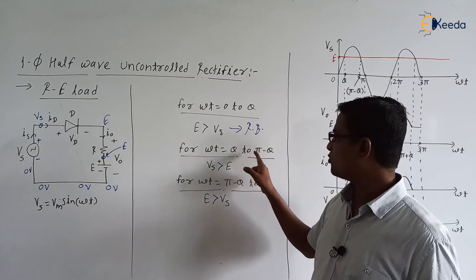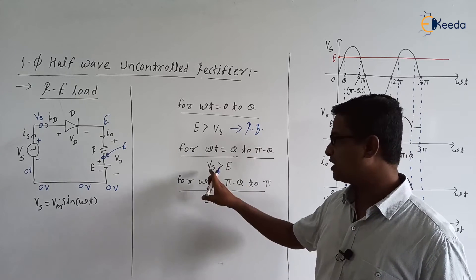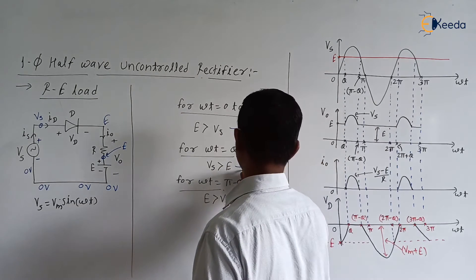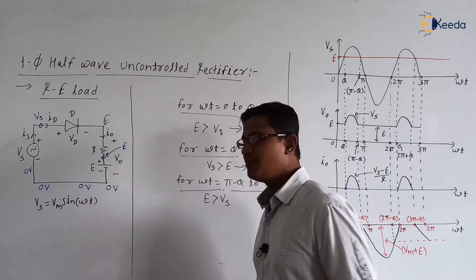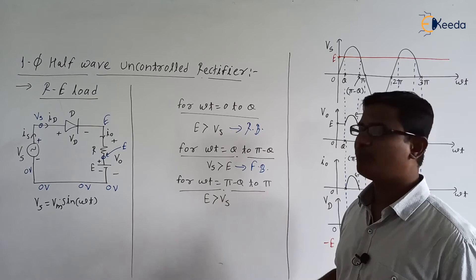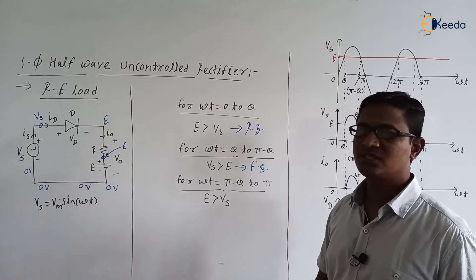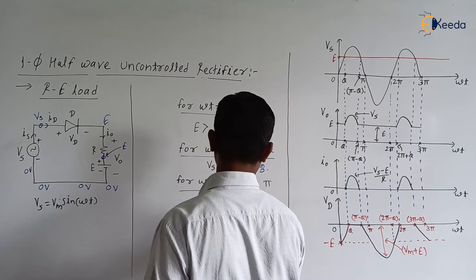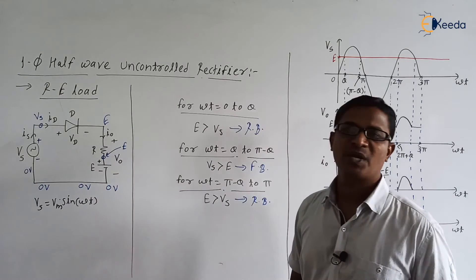During theta to pi minus theta, Vs is greater than E, so anode potential is greater than cathode potential. Therefore during this interval the diode is in forward bias mode. Similarly, from omega t equal to pi minus theta, E is greater than Vs again, meaning the diode is in reverse bias mode.